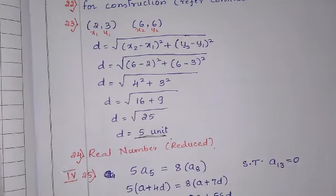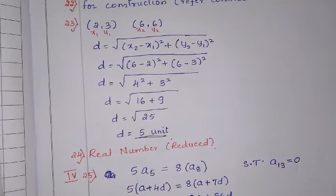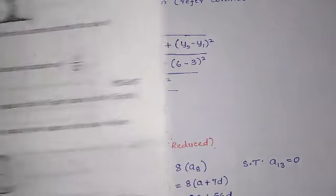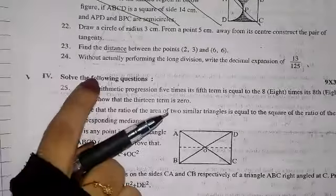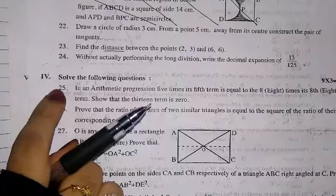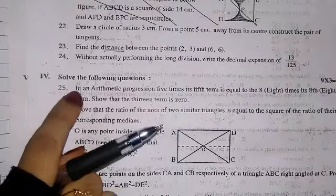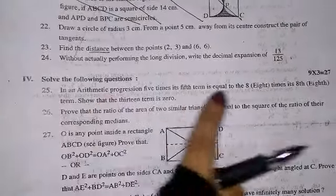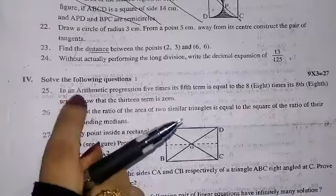Question number 24 is from real numbers and is also from the reduced syllabus. Now let us see question number 25, which is an AP problem — we should read it properly.